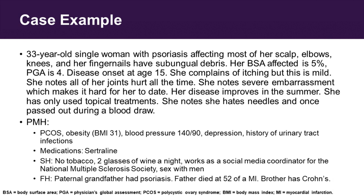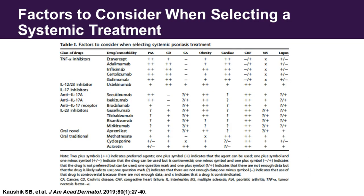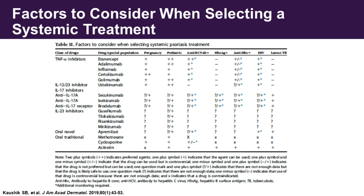Her paternal grandfather had psoriasis, her father died at age 52 of an MI, and her brother has Crohn's. This is a pretty typical case — it's a mixture of several patients but pretty typical of how patients present. A quick question: how many people think that two glasses of wine at night is heavy drinking for a woman? CDC data from Mark Lebwohl's postdoc just came out in JAAD not long ago summarizing different scenarios, different mechanisms, and what the evidence would suggest as a good approach. I'll leave this here for your reference.